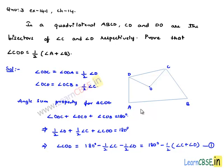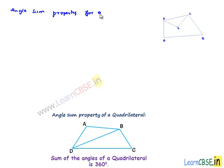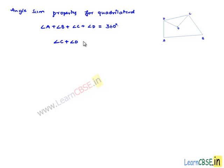Now, let us apply the angle sum property in the quadrilateral. By the angle sum property, the sum of angles in the quadrilateral equals 360 degrees. That is, angle A plus angle B plus angle C plus angle D equals 360 degrees. From this, we get angle C plus angle D equals 360 degrees minus angle A plus angle B. Let this be equation number 2.